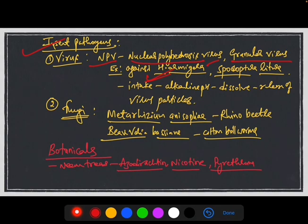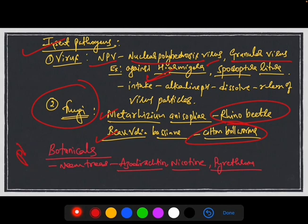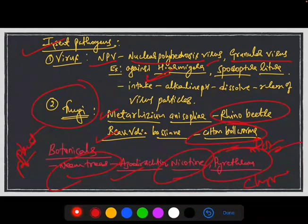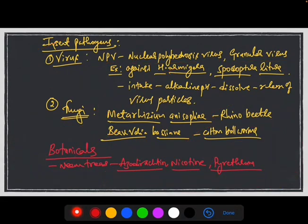Next is fungi. Metarhizium anisopliae, which is against rhinoceros beetles, and Beauveria bassiana against cotton bollworms are major fungal biocontrol agents. In biological control methods, botanicals — plant products — are also used. Like neem (Azadirachta indica), nicotine which is tobacco-derived, and pyrethrum which is chrysanthemum flower-derived products, which are famously used against insect pests.